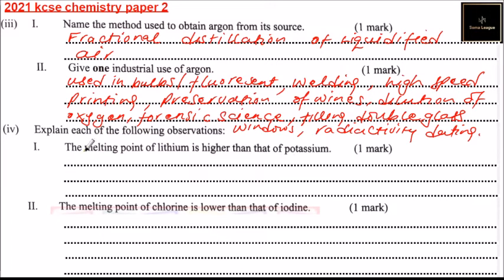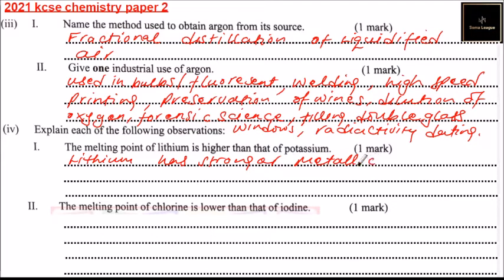Part 4, Part 1: explain why the melting point of lithium is higher than that of potassium. The reason is that lithium has stronger metallic bonds compared to potassium.